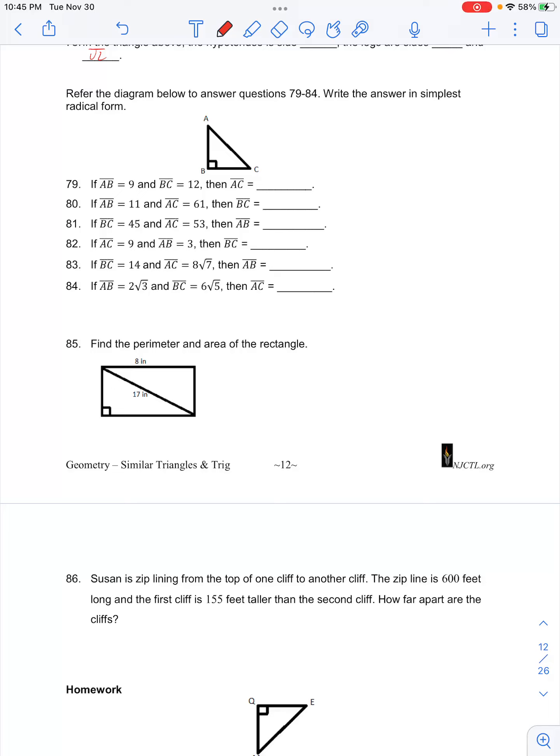In number 83 in your class check for similar triangles, you're asked to find the length of AB when AC is equal to 8 radical 7 and BC is equal to 14.